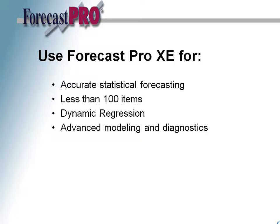Although Forecast Pro XE uses the same underlying forecasting methodologies found in Forecast Pro Unlimited and Forecast Pro Track, it is a very different solution. Forecast Pro XE is a desktop analysis tool designed for use by individuals who are forecasting less than 100 items, and whose primary goal is to generate accurate, statistically-based forecasts, as opposed to manipulating forecasts after they're generated. It's the only version of Forecast Pro that includes dynamic regression modeling, and it also provides more detailed custom modeling options and diagnostic displays than the other versions.